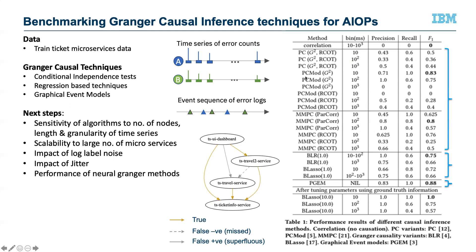References to all these algorithms are available in the paper. Each algorithm essentially tries to compute a causal graph of this form. Here, the golden colored arrows represent correct computation of a true causal relationship, the gray colored edge represents a superfluous causal relationship, and the dotted arrow is one where an algorithm failed to compute — missed — a causal relationship. Once we have this information, we compute the precision, recall, and F1 score for each of these algorithms.